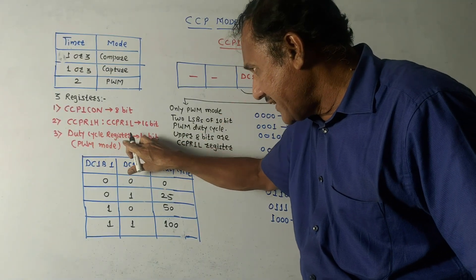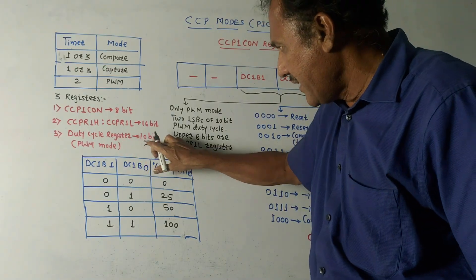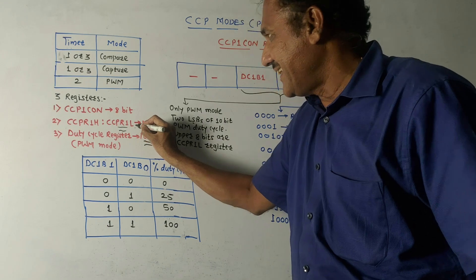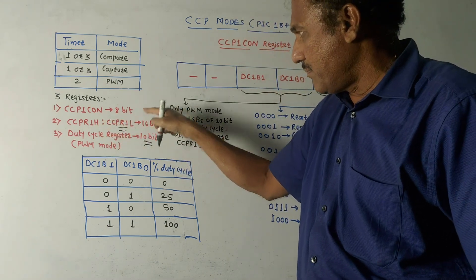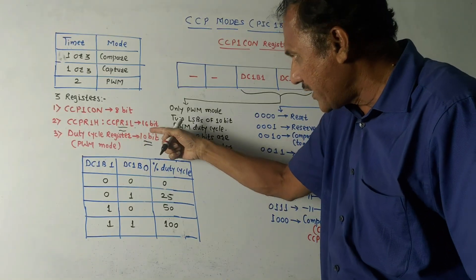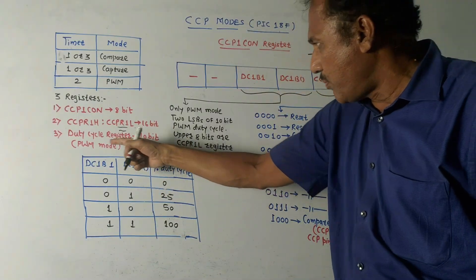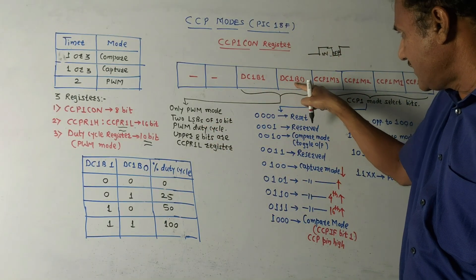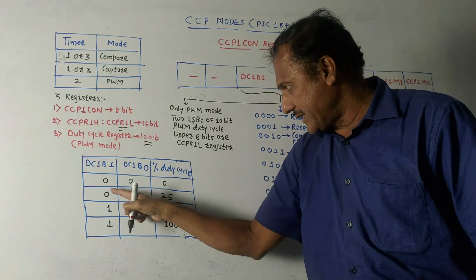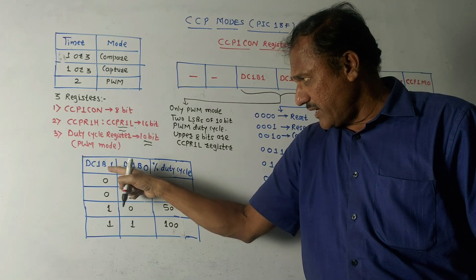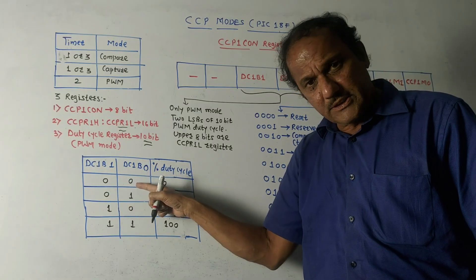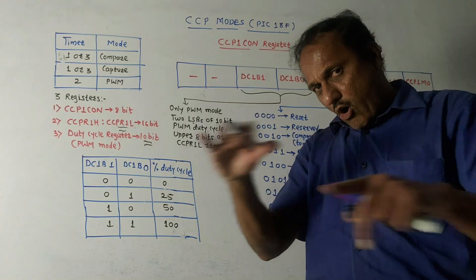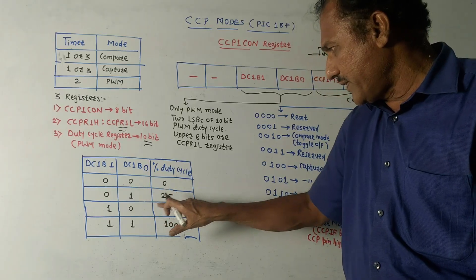The duty cycle register for PWM mode consists of 10 bits: 8 bits are taken from CCP1L (the lower register), and two extra bits — DC1B1 and DC1B0 — are used to control the duty cycle. If DC1B1 and DC1B0 are 00, duty cycle is 0%; 01 gives 25%; 10 gives 50%; 11 gives 100%.